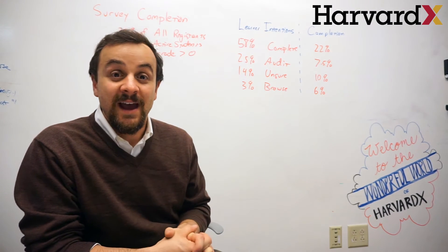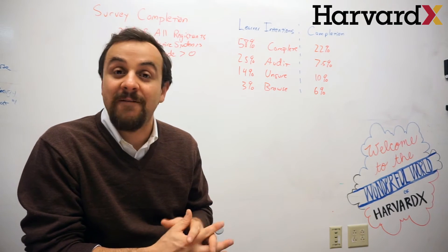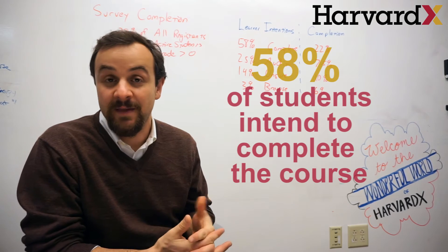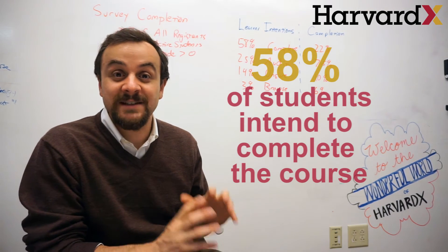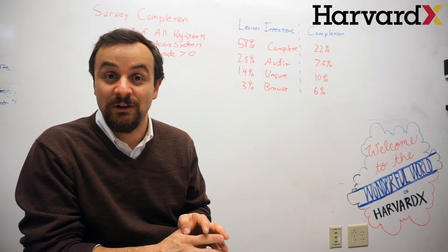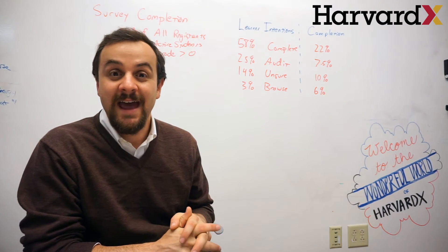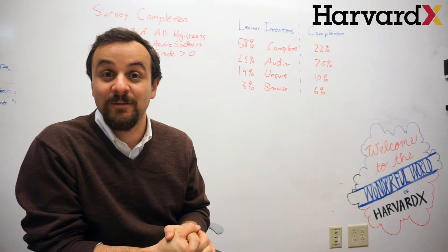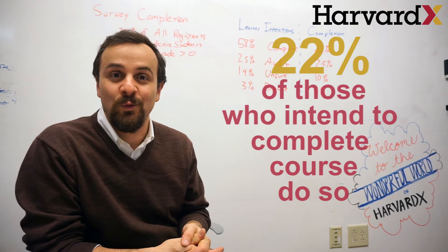We found that in our surveys, more than half of the people who answer our surveys, about 58 percent of folks, said that they intended to complete a course. So that's an interesting analytic sample to look at: people who put in the effort to complete the optional pre-course survey and then told us that they were intending on completing the course. Of those folks, about 22 percent go on to complete the course.